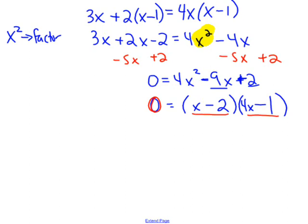So what makes x minus 2 equal 0? 2. And what makes 4x minus 1 equal 0? We'll go ahead and solve that. x equals 1 fourth. So x is 2 and 1 fourth.